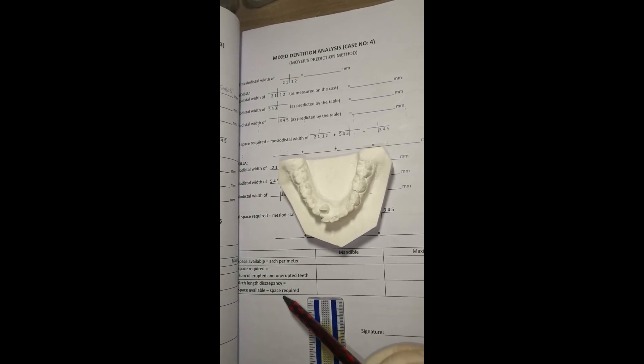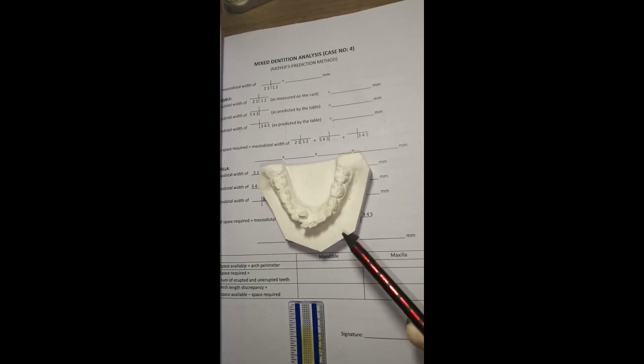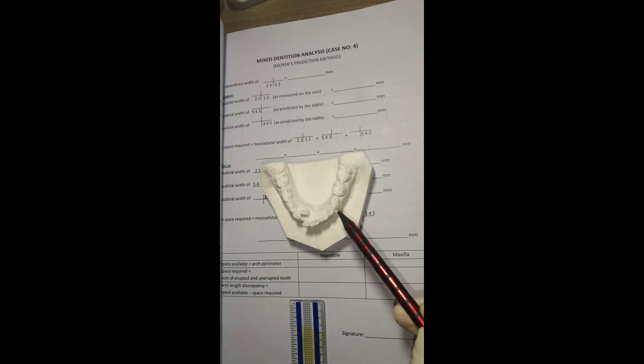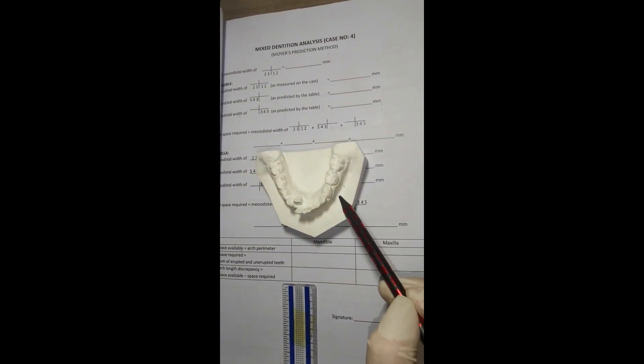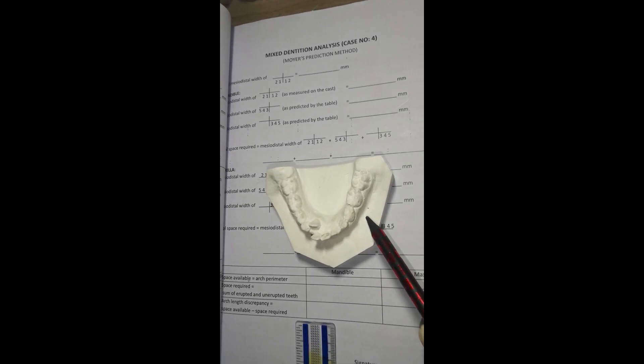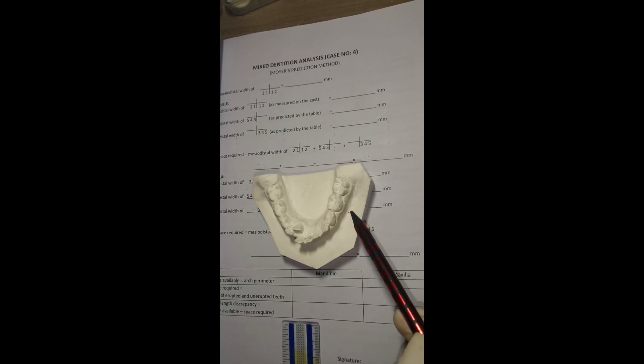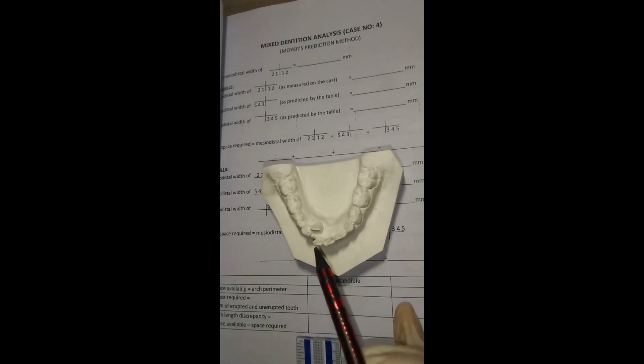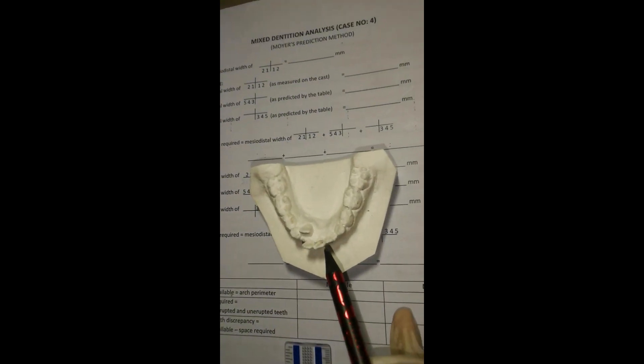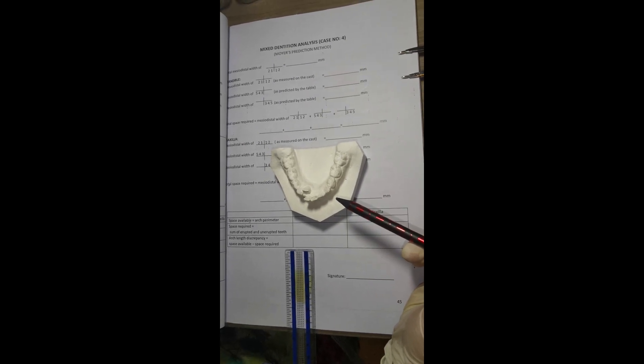In space required, we have to measure the mesodistal width of each permanent tooth, but in mixed dentition, permanent canines and premolars are unerupted. So, Moyer's prediction method will help in predicting mesodistal width of unerupted canines and premolars using the width of erupted mandibular incisors. Now, I will show you how to perform mixed dentition analysis on this cast using Moyer's prediction method.